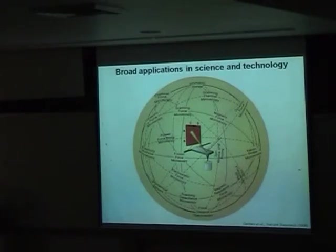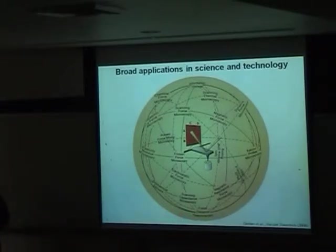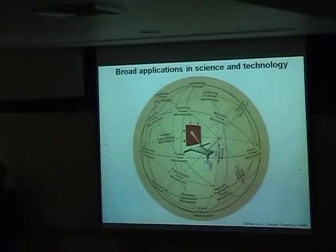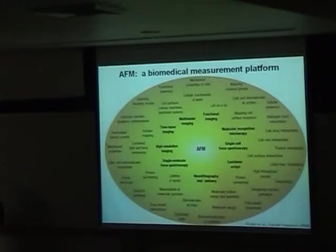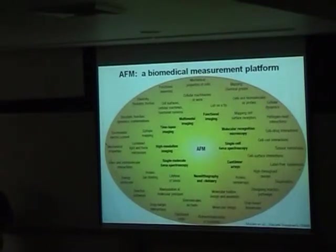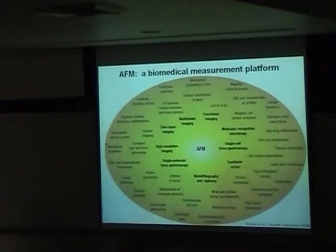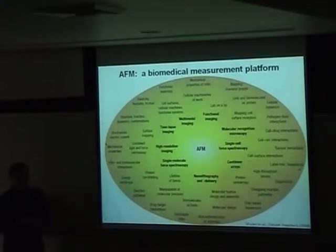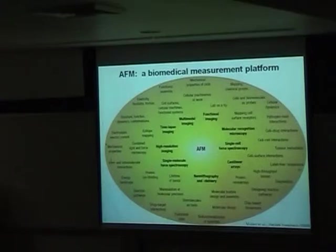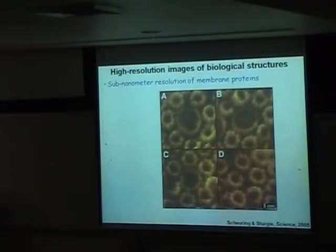AFM or scanning probe microscopy is used for lots of different things - chemical force microscopy, electrostatic force microscopy, disk drives, and a lot of practical things in nanoscience and nanotechnology. My interest is driven by biological problems. In the biological context, AFM use is really broad - you can use it as a high-resolution microscope, combine it with optical microscopes, learn about mechanical properties of individual cells, and study different types of biological processes. AFM is increasingly used in biology but it's certainly not as quantitative as it could be.